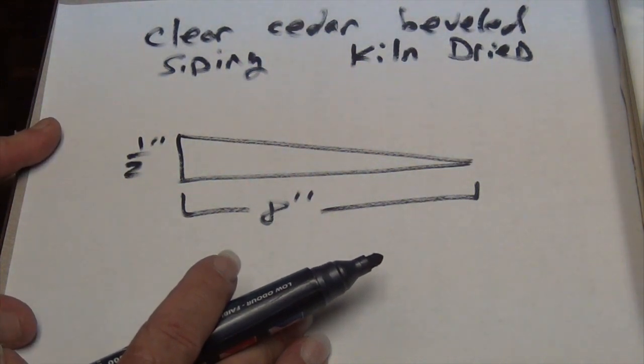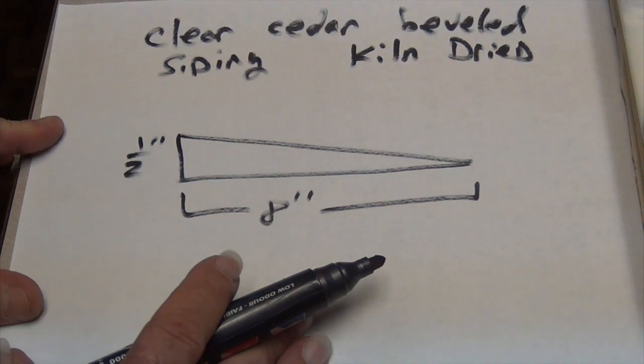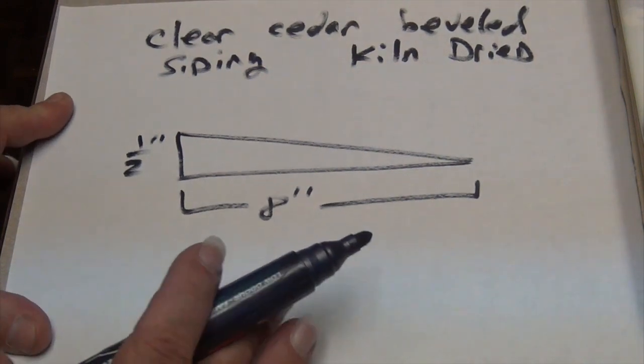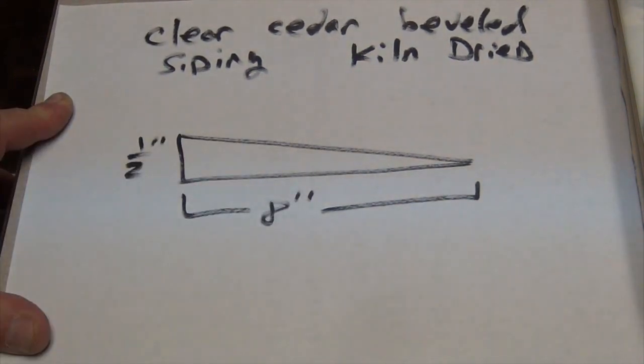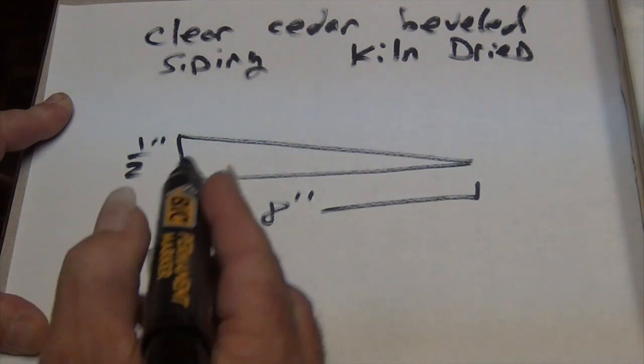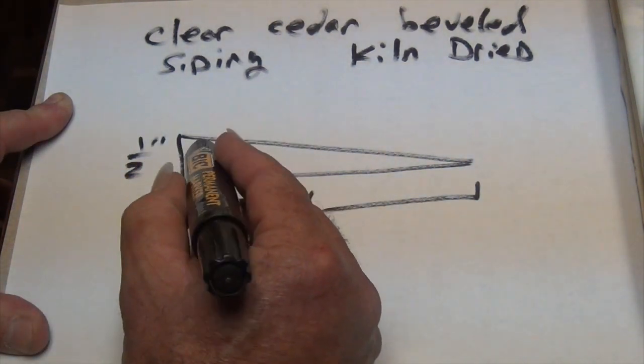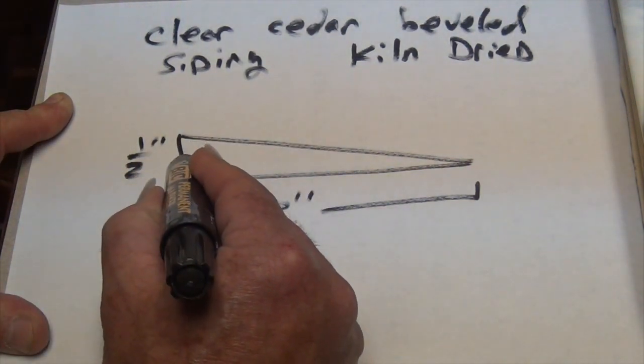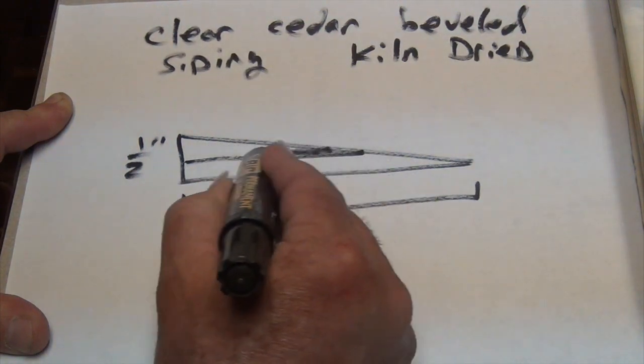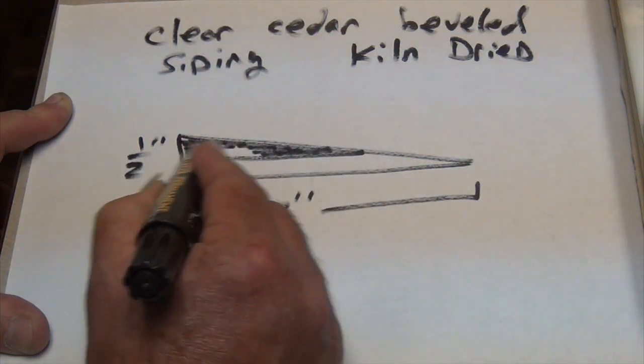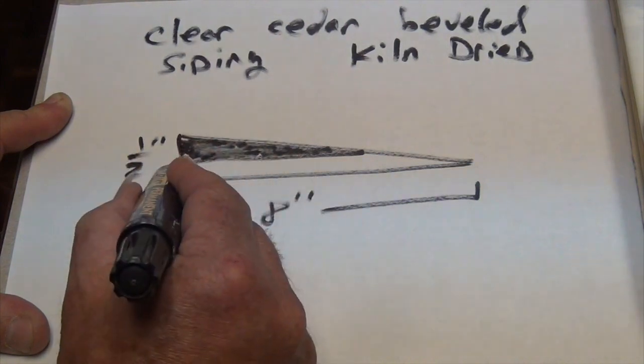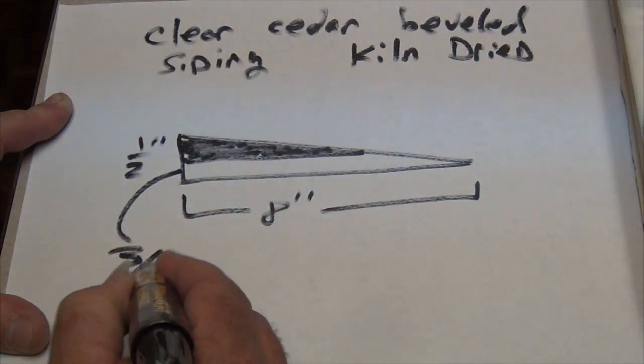He'll feed the siding through the slot on the planer, and that'll grind off this part of the siding so that this edge is now three-sixteenths inch thick.